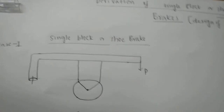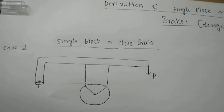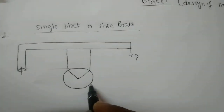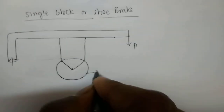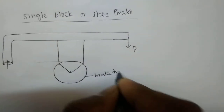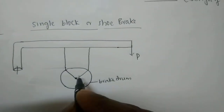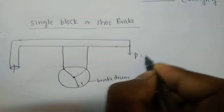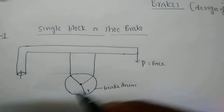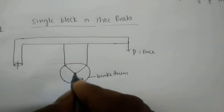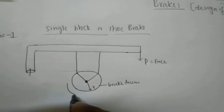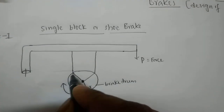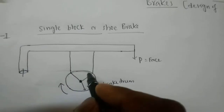The first case is the single block shoe brake. Here we have the brake drum with radius R. You can apply the force here. We consider the brake drum rotating in the clockwise direction.